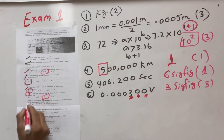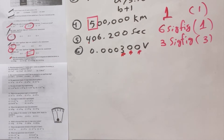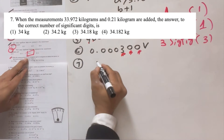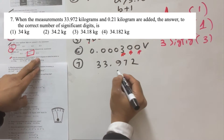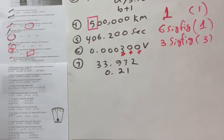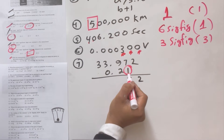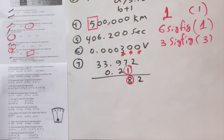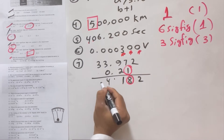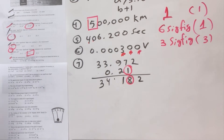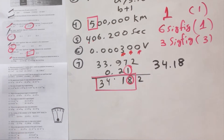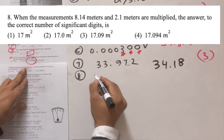Question number seven: add 33.972 and 0.21. Using the addition rules from class, you identify the least precise decimal place, carry out the addition, and the final answer is 34.18. That would be option number three.